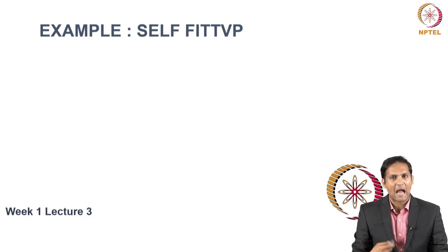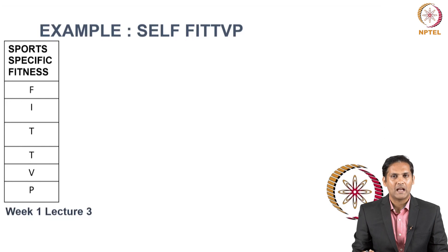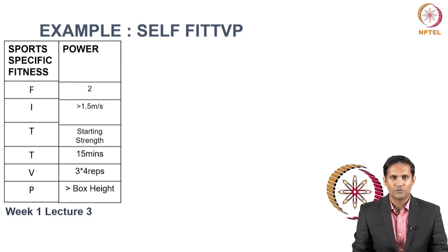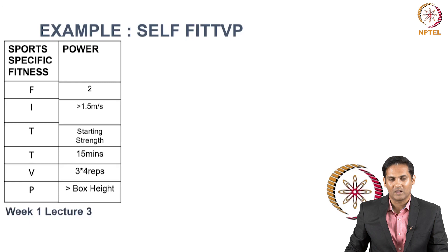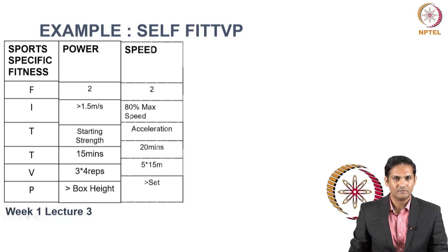Let me give an example of how I work to improve sports specific fitness variables using acute training variables FIDTVP. For power development: I train 2 times a week for power. I use starting strength as the intensity type for both sessions, maintaining velocity greater than 1.5 meters per second. The progression I am going to give is by increasing the box height. This FIDTVP framework helps to describe your training routine and plan each session.